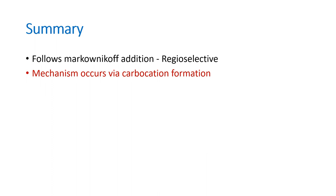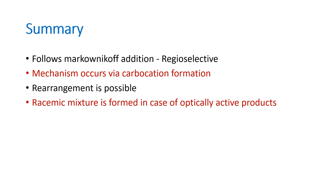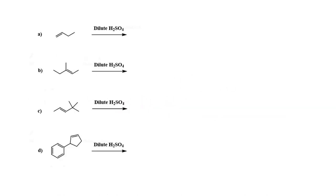In summary: first, the addition reaction follows Markovnikov addition, giving regioselectivity as to which carbon atom the negative part of the addendum will go to. Second, the mechanism occurs via carbocation formation, and this carbocation formation leads to rearrangement if possible. Third, because carbocation formation is involved, if an optically active product is formed, you get a racemic mixture. Here are three examples which you can try and work out to better understand this set of reactions. All the best. Thank you.